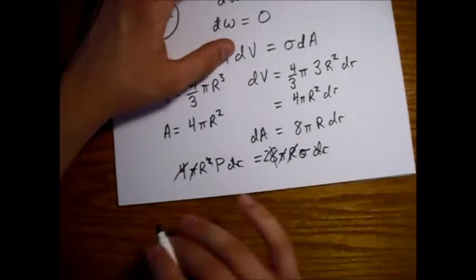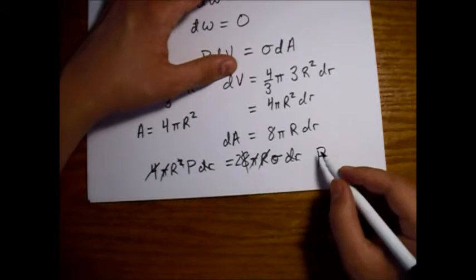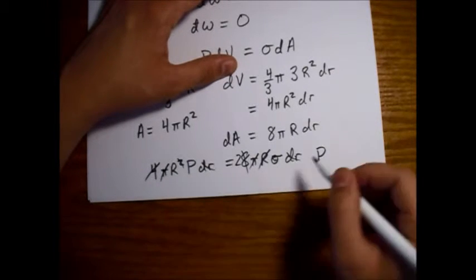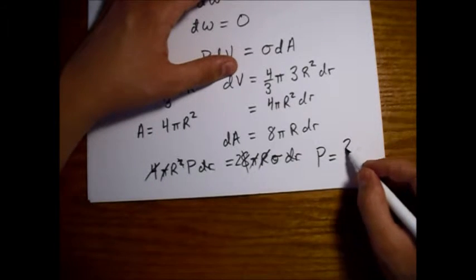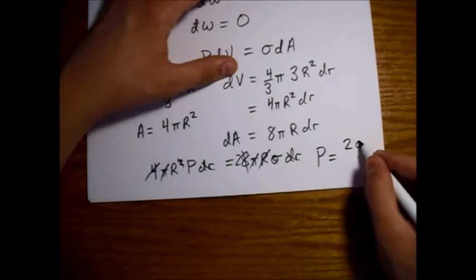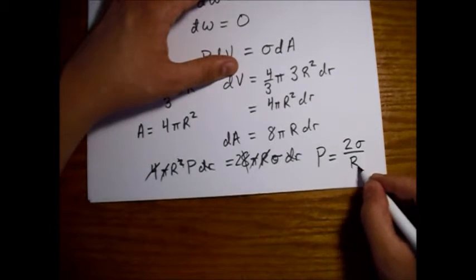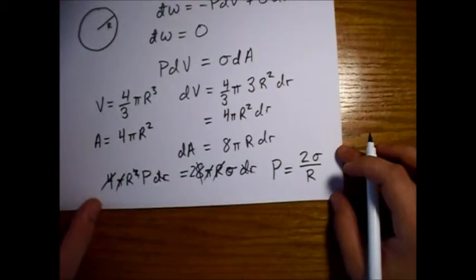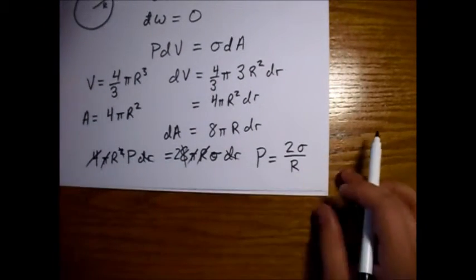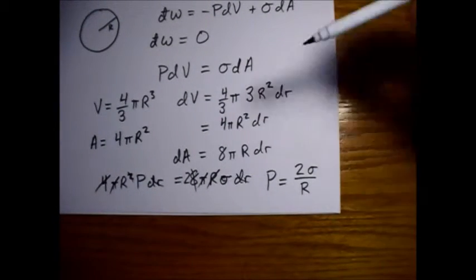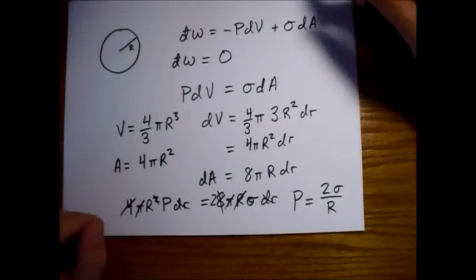If we can pick through this and find the pieces that are left we have a p here and then here we have a two, we still have our sigma, and then we'll have this r that we can bring downstairs.